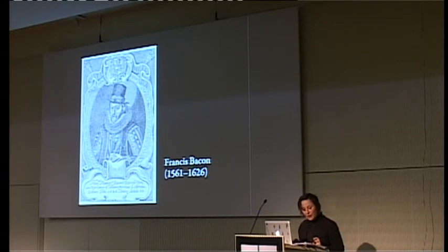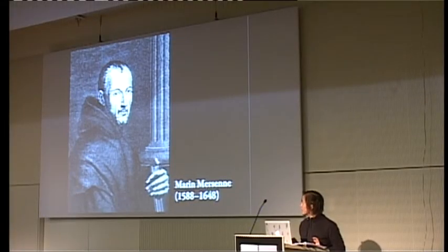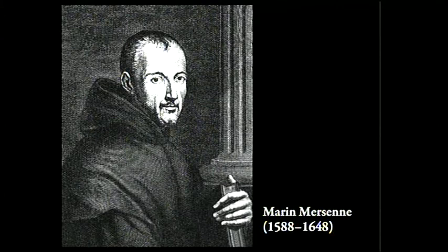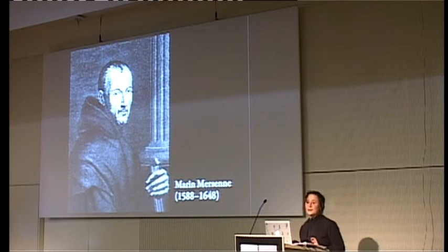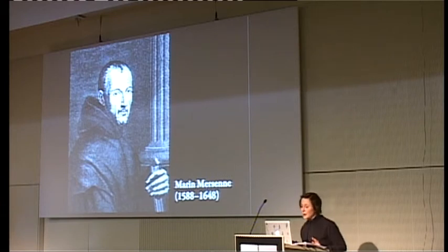The first person to actually put into practice what Bacon wanted done was Mersenne — Marin, probably. At the time he was like the one-person scholarly journal, because if you wanted some discovery known, you'd just write a letter to Mersenne and he would write letters to everybody he knew — and he knew lots and lots of people — and that's how a new fact would become known.